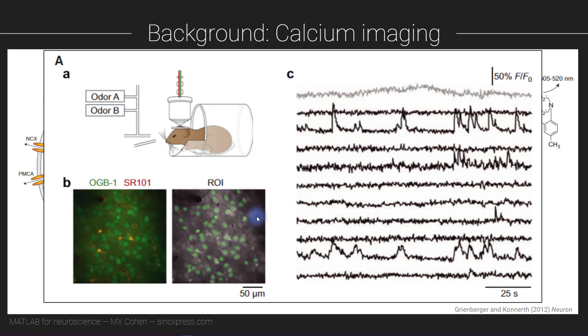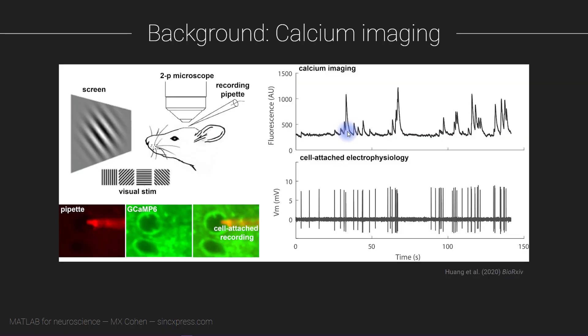You can see there are a lot of small fluctuations and these occasional large deflections. These large spikes in the calcium time series correspond to action potentials, which you see better in this slide here.